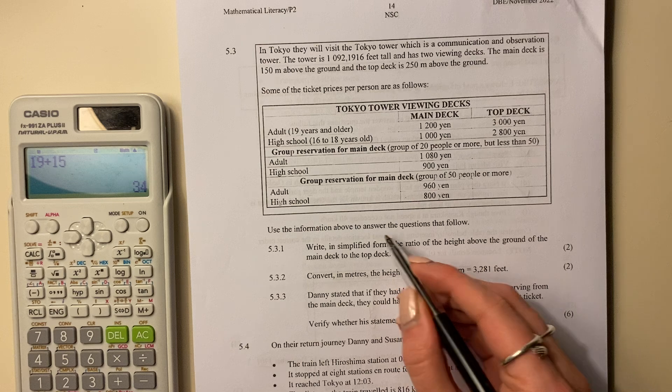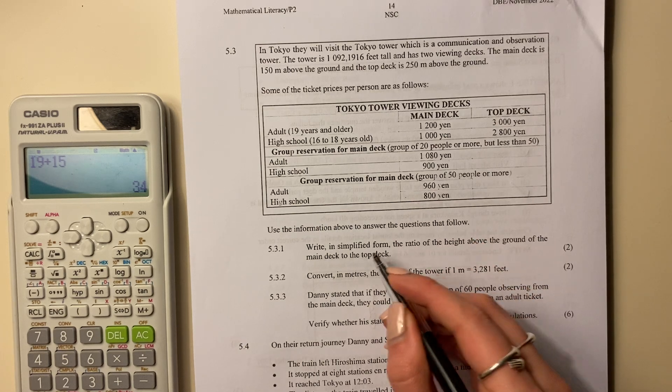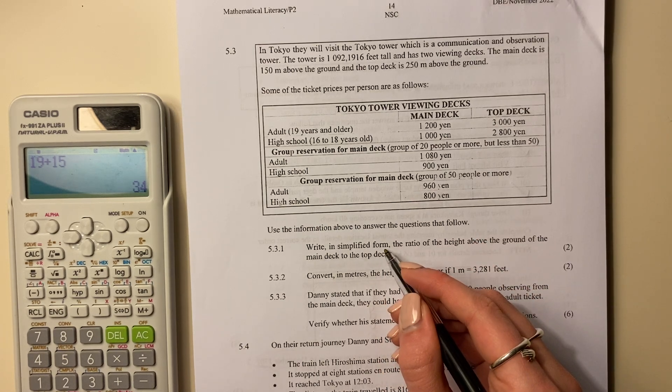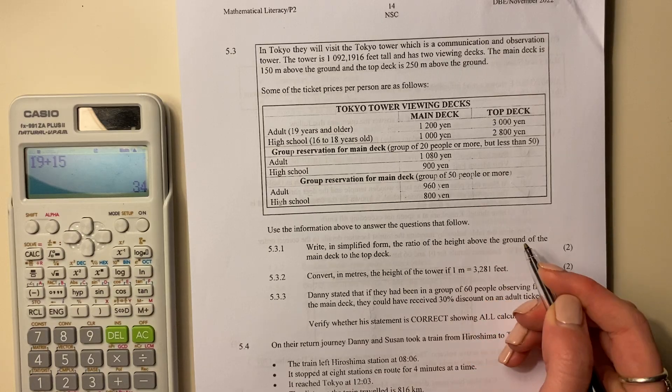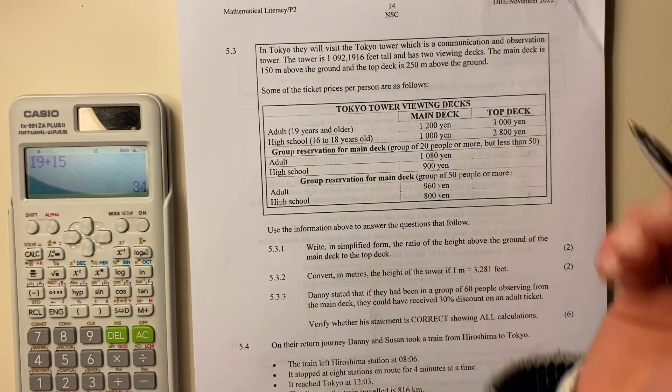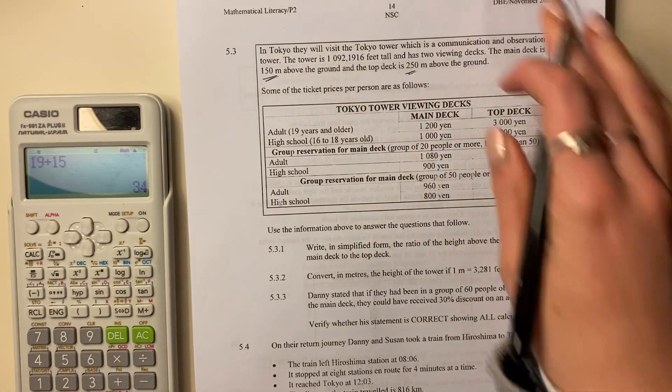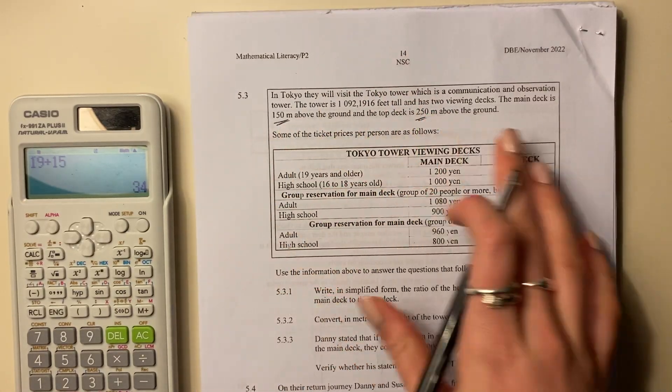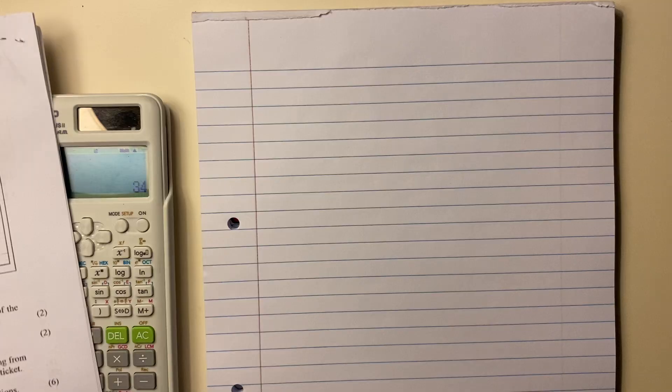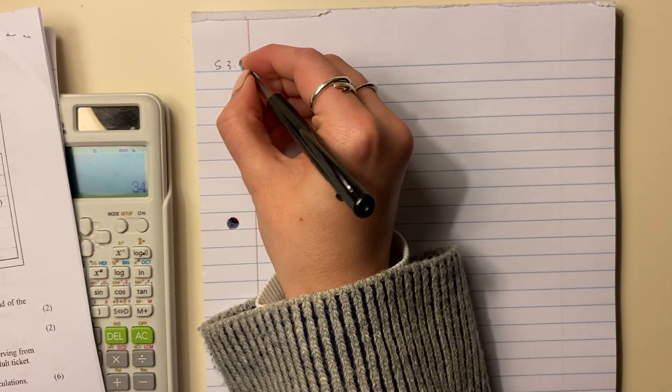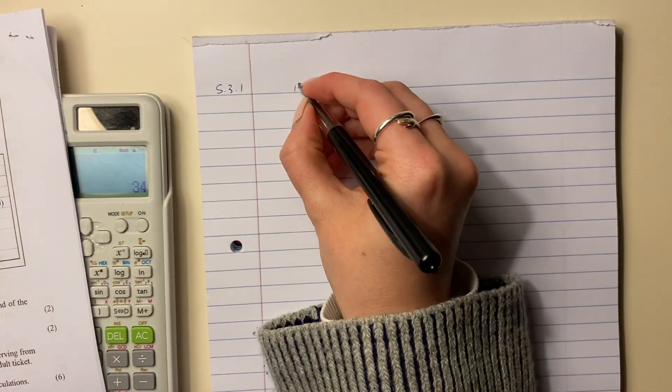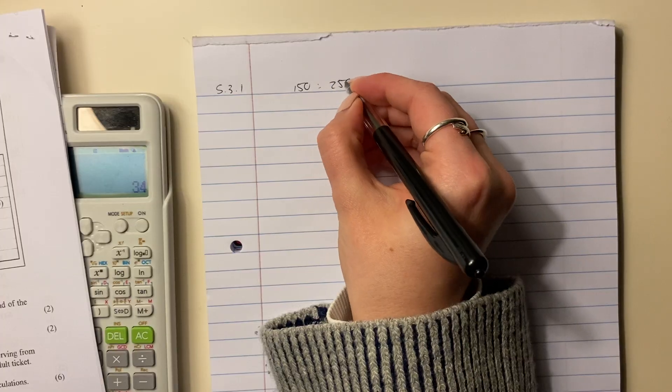Use the information above to answer the questions that follow. Write in simplified form the ratio of the height above the ground of the main deck, the 150, to the top deck, to the 250. That's over there. So let's write that down. 5.3.1. So it would be 150 to 250.